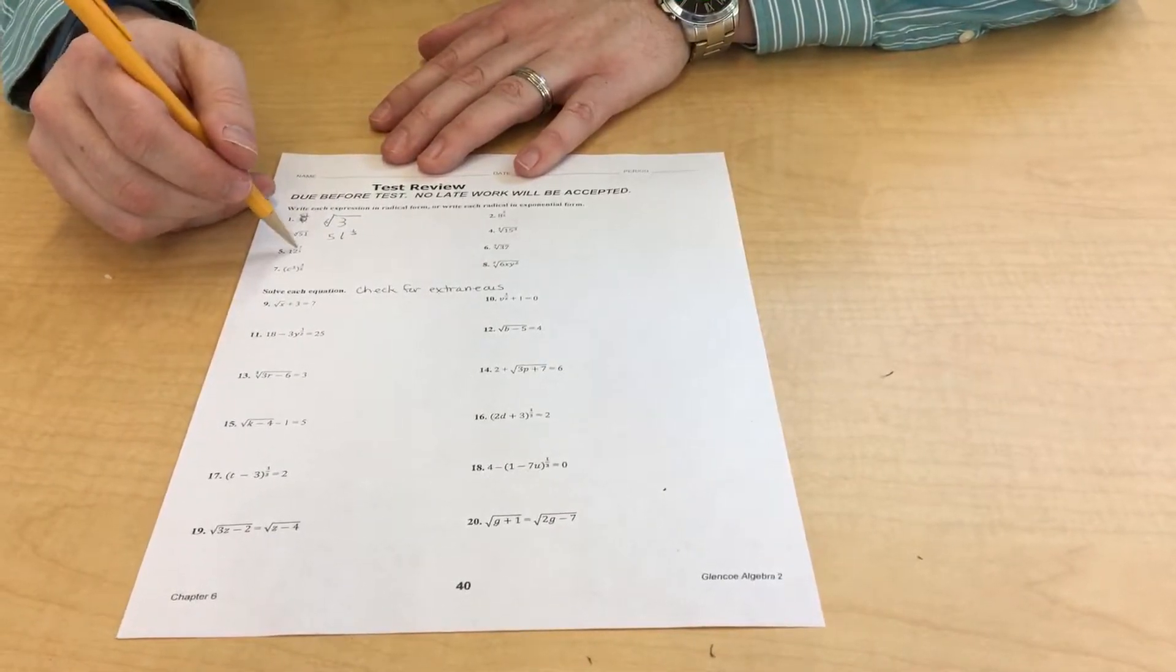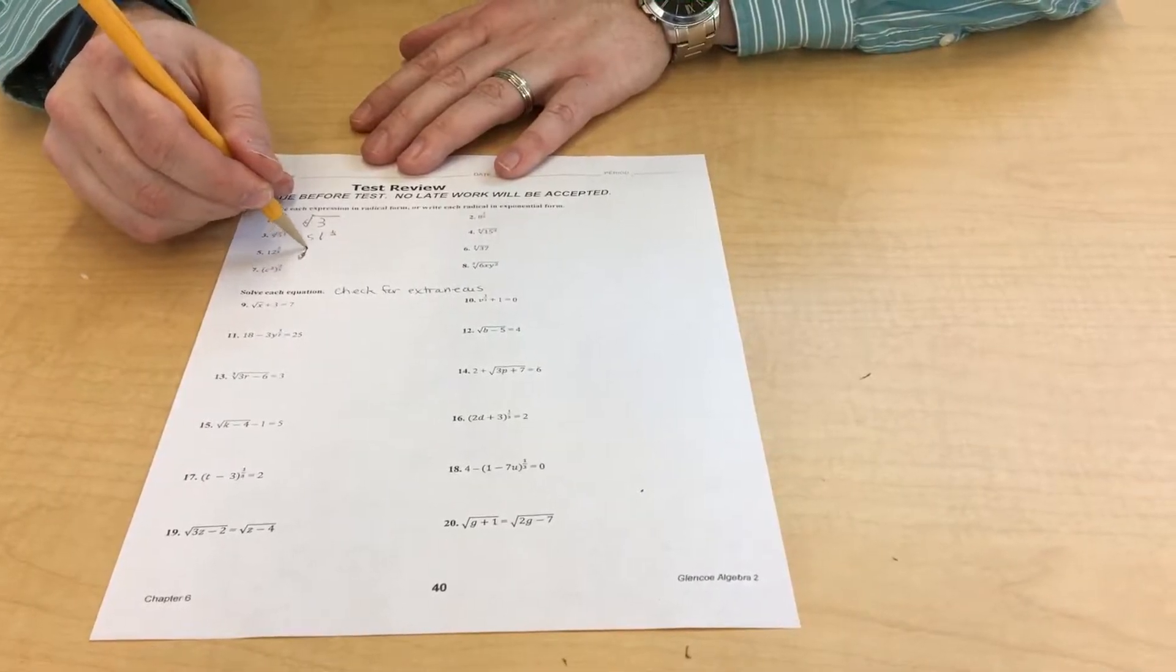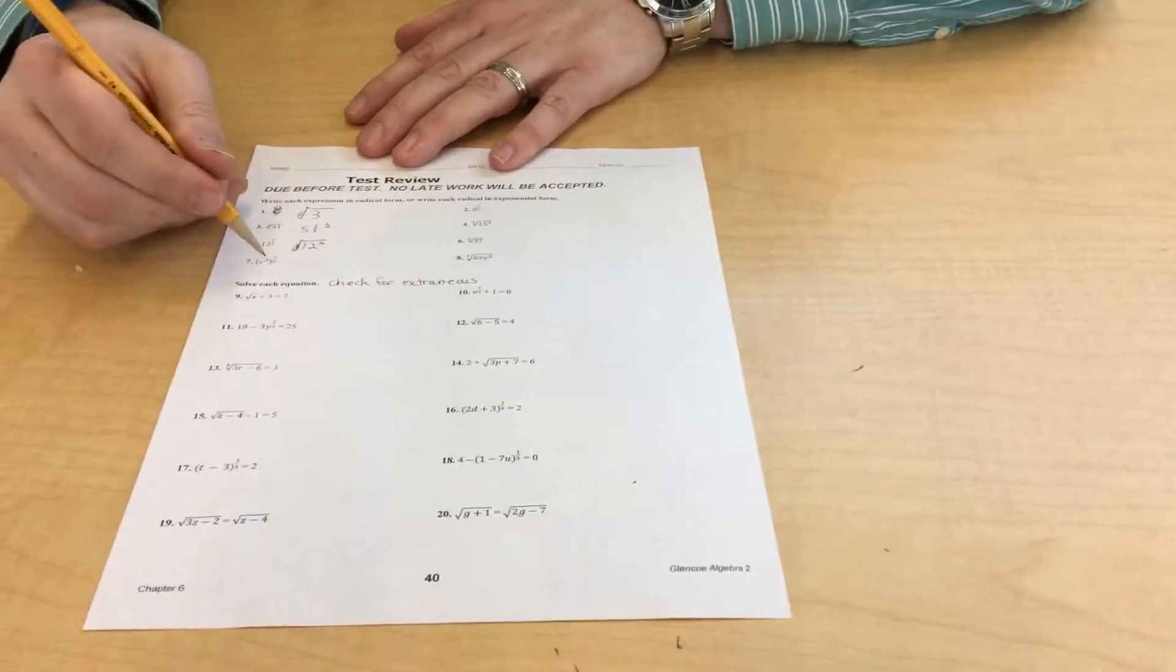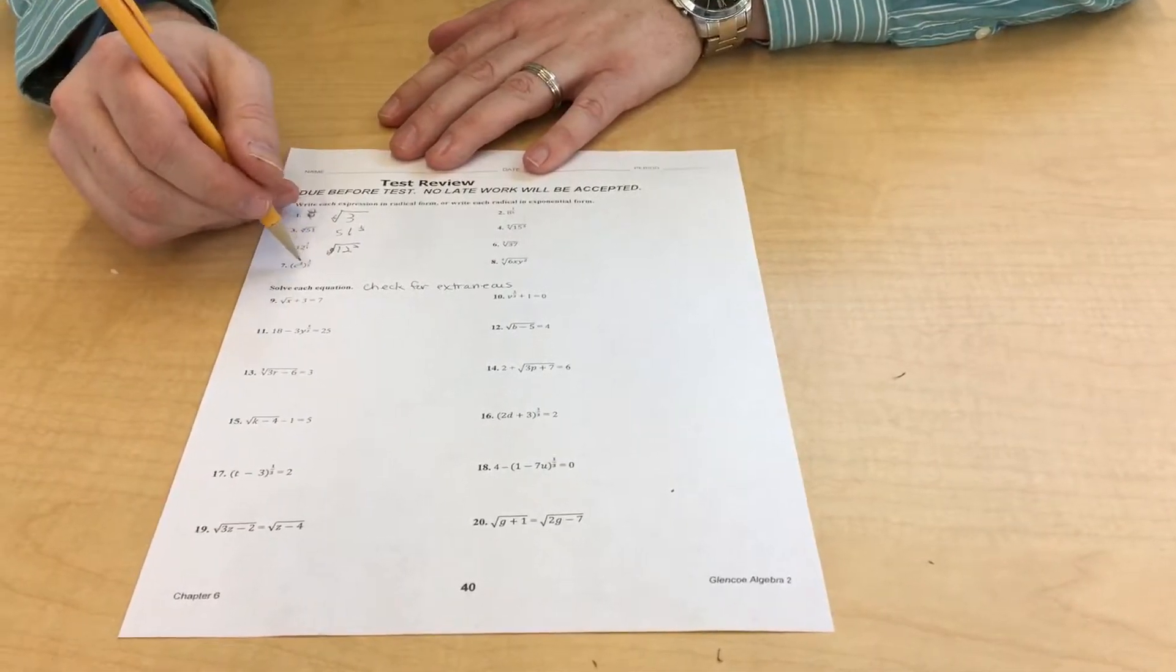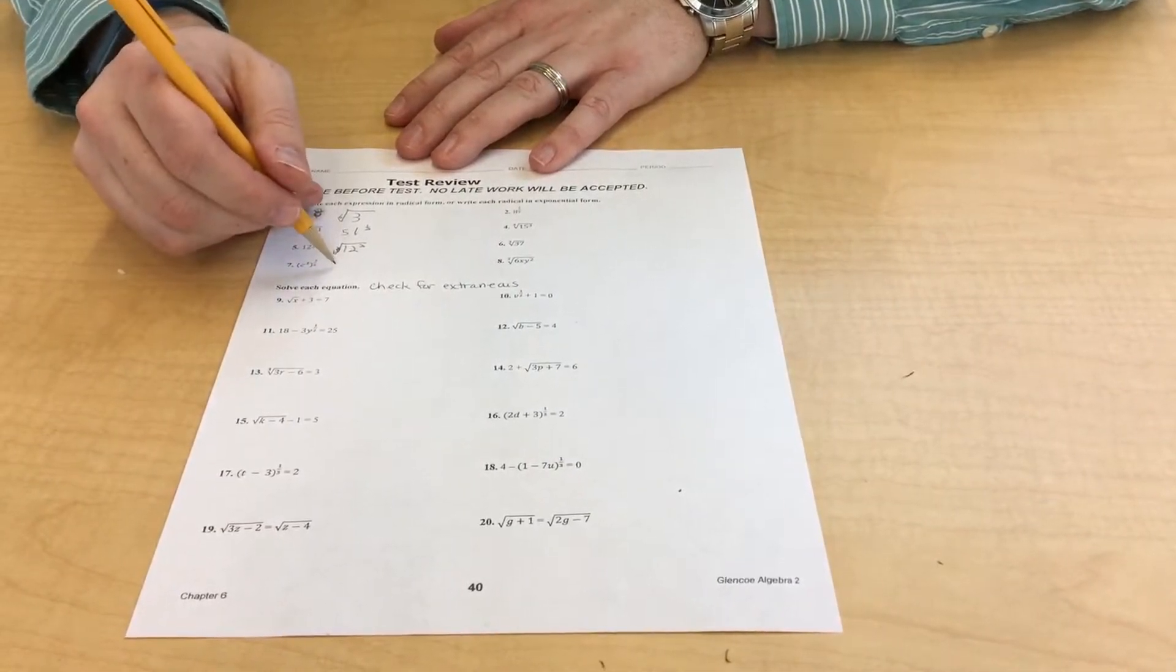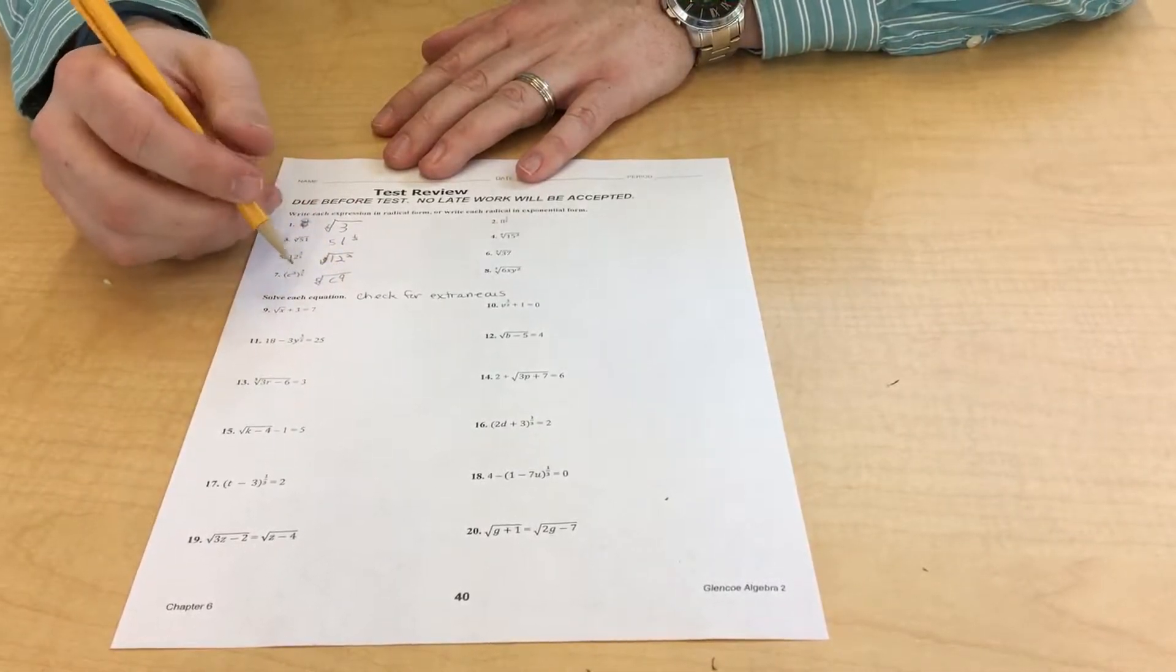Remember that these are interchangeable. 12 to the 2/3 power is the cube root of 12 squared. C to the 3rd to the 3/5, when you raise a power to a power, you multiply them. That would be 3 times 3, which is 9.